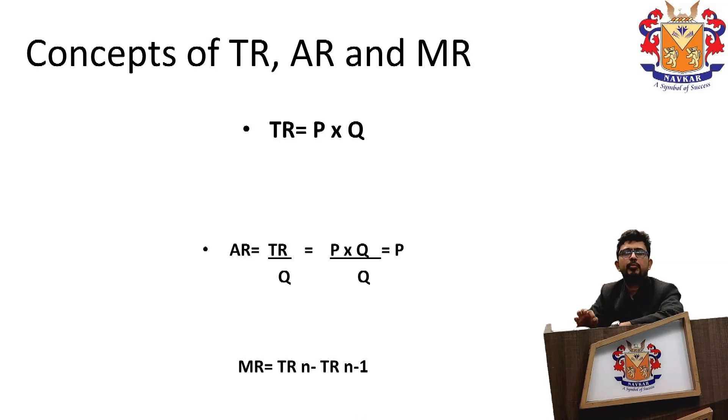The second concept is average revenue. Average revenue means the per unit revenue of the firm which is always equal to total revenue upon quantity. So TR upon Q is the formula for average revenue. Now total revenue is equal to price multiplied by quantity, so in the formula of average revenue, TR upon Q,